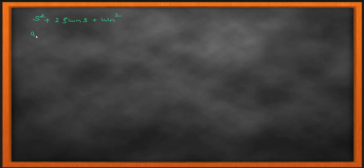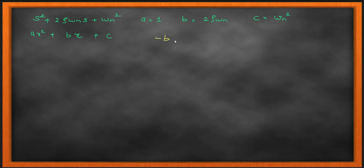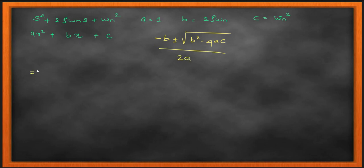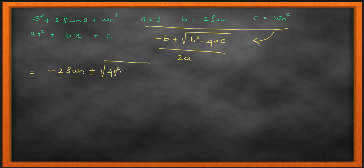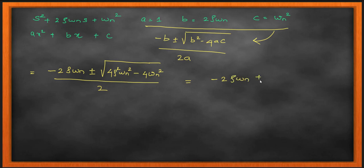To find the roots of this quadratic equation, we use the quadratic formula: minus b plus or minus the square root of b-squared minus 4ac, all divided by 2a. Correlating with s-squared plus 2*zeta*omega_n*s plus omega_n squared: a=1, b=2*zeta*omega_n, and c=omega_n squared. Plugging these in gives two roots. It is also worth noting that in both first and second order systems, you always work with the denominator — you find the roots and then compute the inverse Laplace transform to get the time response.